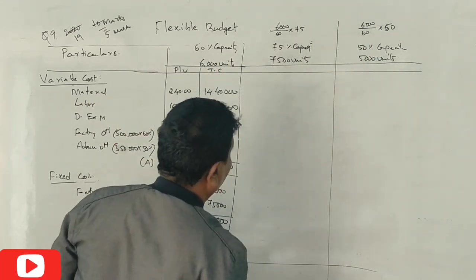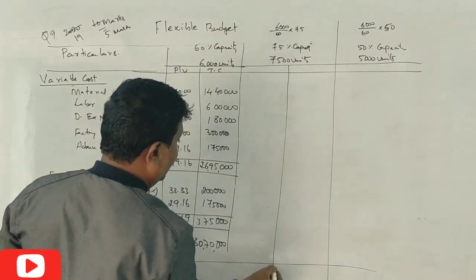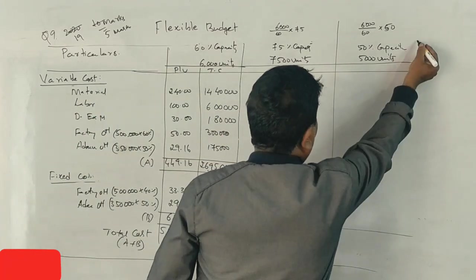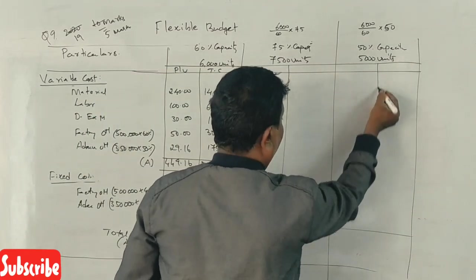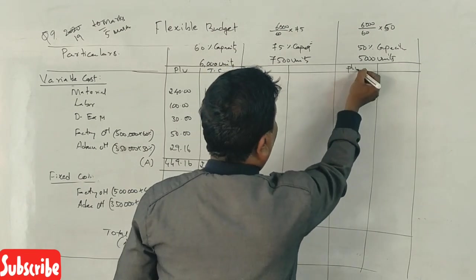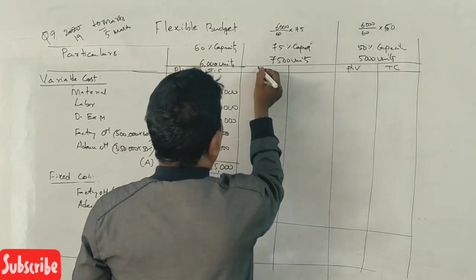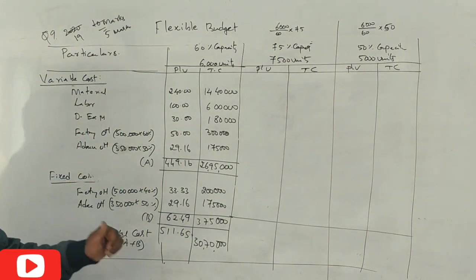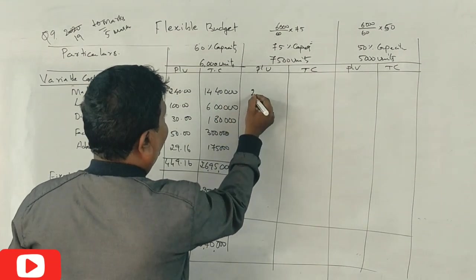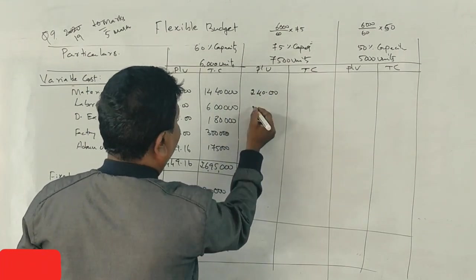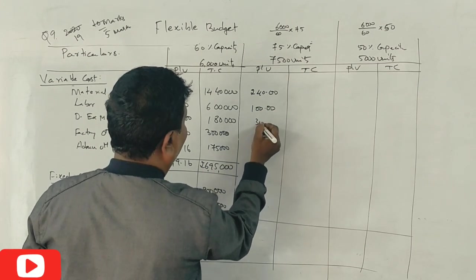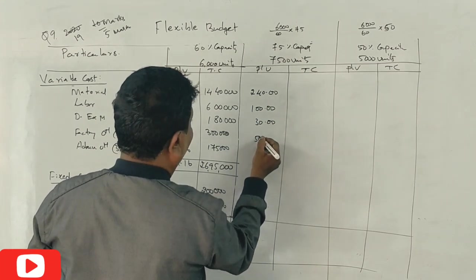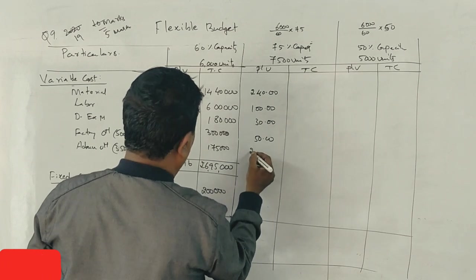For variable cost, per unit is the same area. Variable cost per unit remains constant regardless of capacity. The per unit rate doesn't change.